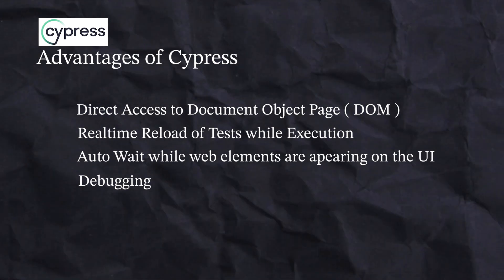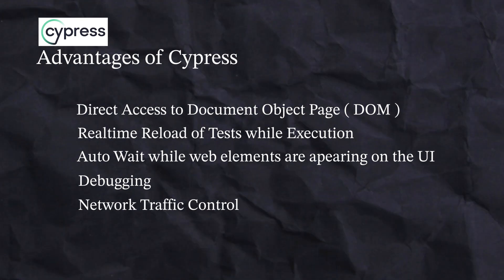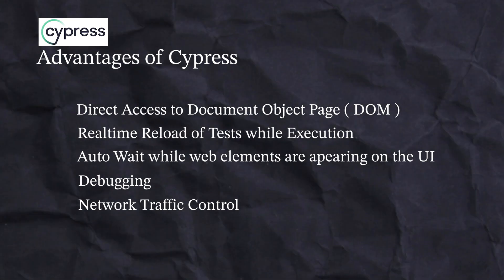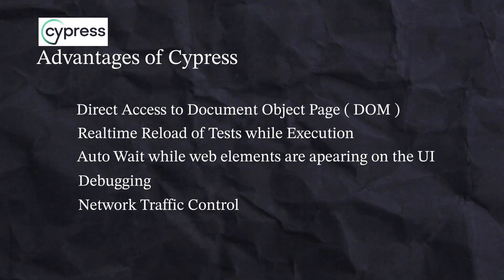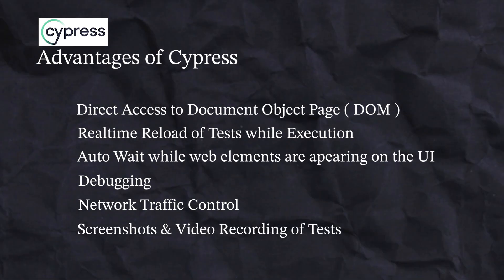The next advantage is debugging. With Cypress you can easily pause your test case to see what is happening in the DOM or on the UI, giving the automation tester more control to look into the test and debug in a better way. Also, with network traffic control, you can stop and control network requests coming and going to the browser, helping testers look into network traffic and test more edge cases.